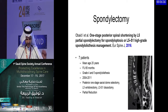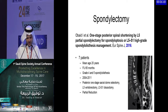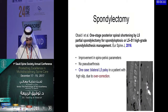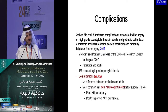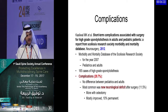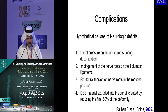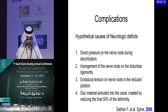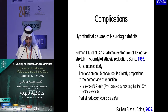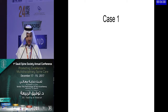Spondylectomy has been described as a one-stage posterior shortening — published in seven patients with good correction and reasonable outcome. Neurologic complications were reported in close to 30%, with new neurologic deficit at around 11%, and L5 weakness reported at 30% in another paper. Hypothetical causes of neurologic deficit include direct pressure on nerve roots, impingement at the iliolumbar ligaments, extradural tension on the nerve root, and disc material extruded into the canal. An anatomic study showed that maximum tension occurs at the final 50% of deformity correction, approximately 70% through the procedure.